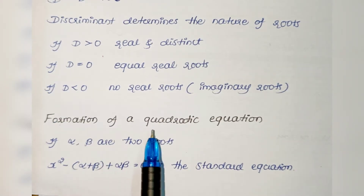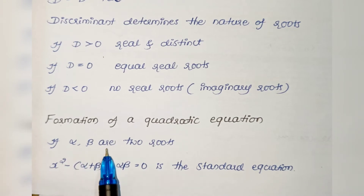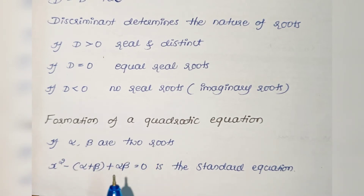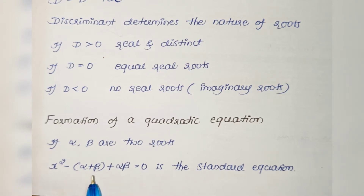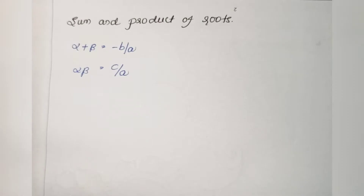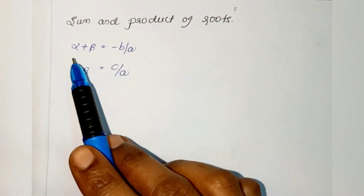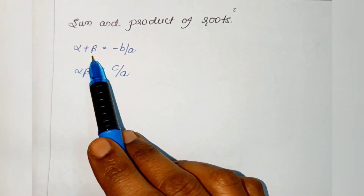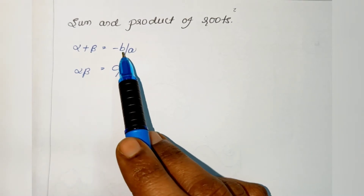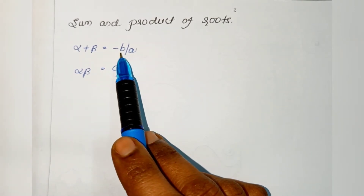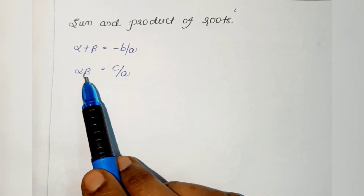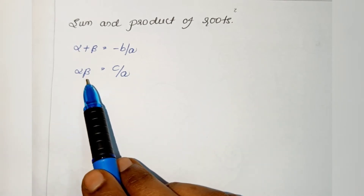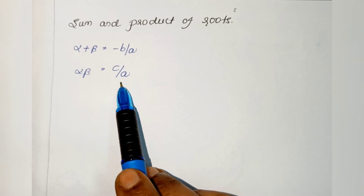For the formation of a quadratic equation: if α and β are two roots, the equation is x² − (α + β)x + αβ = 0. For sum and product of roots: if α and β are two roots of a quadratic equation, then the sum of roots equals −b/a (coefficient of x divided by coefficient of x²), and the product of roots equals c/a (constant term divided by coefficient of x²).